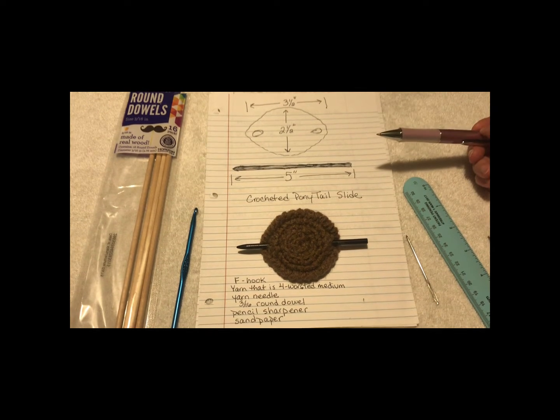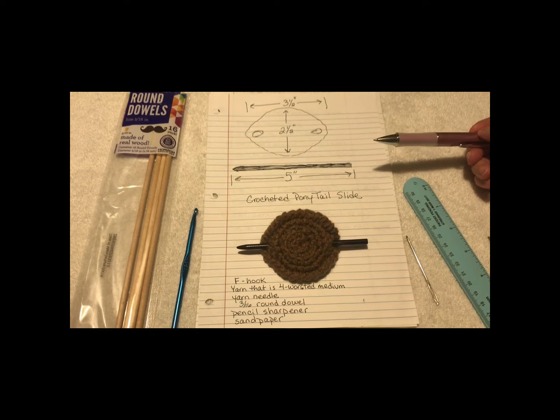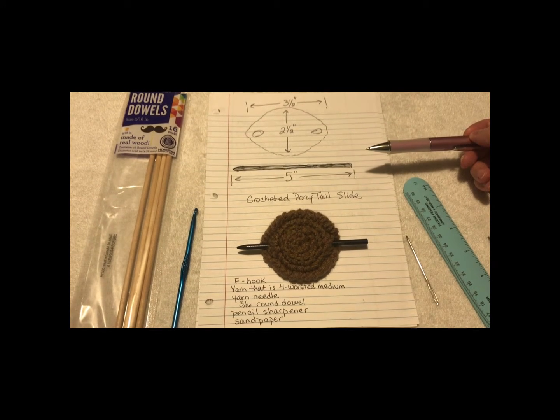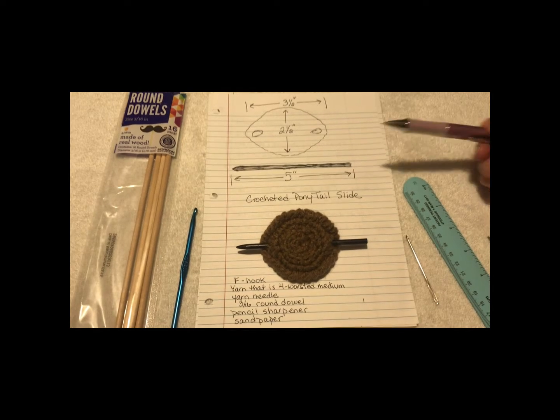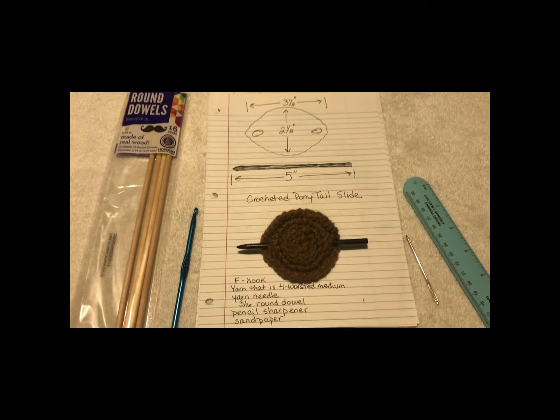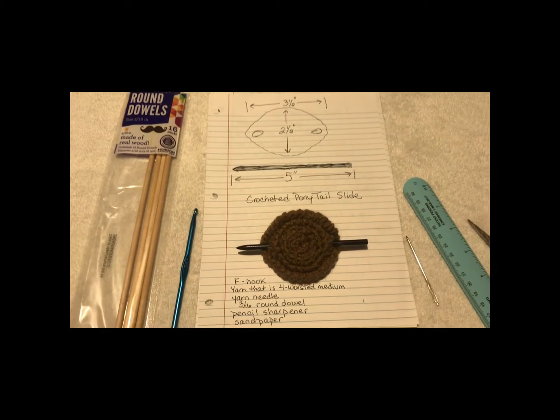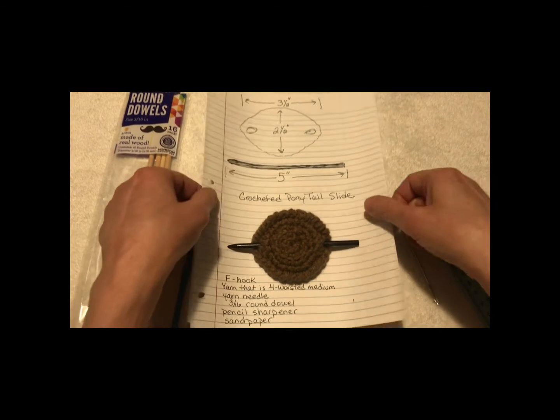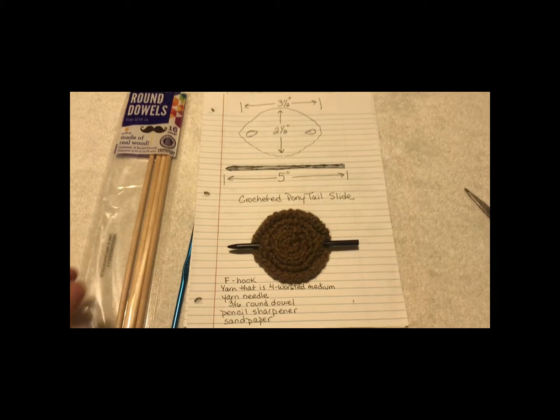Now, if you make it and it's smaller than that, you can up one in the crochet hook. If it's a lot bigger, then you can go down. Or just make your slide shorter or longer, depending on what you like.